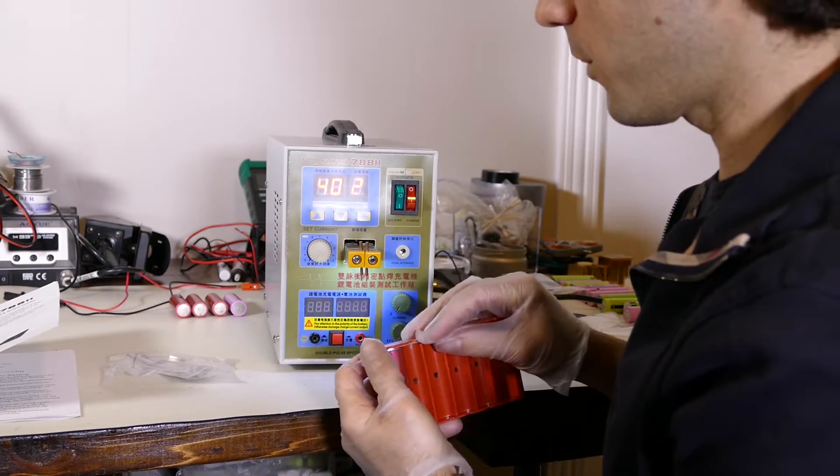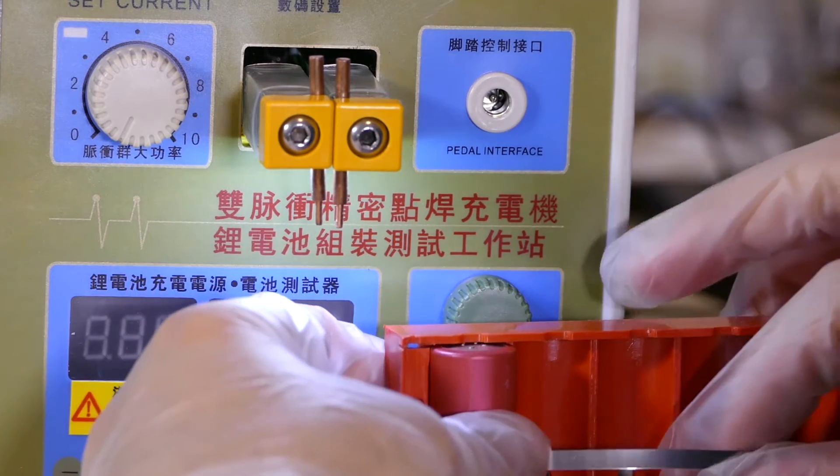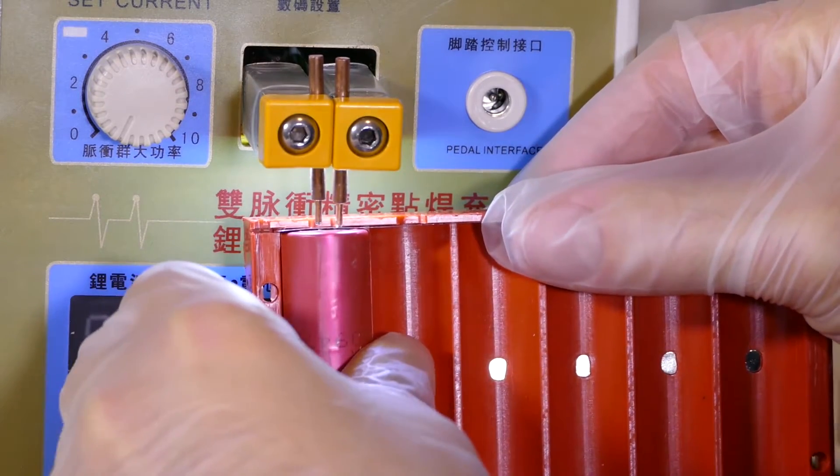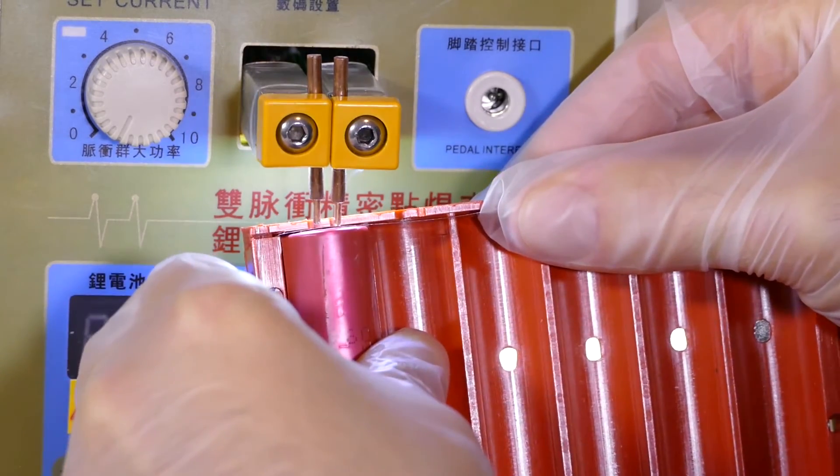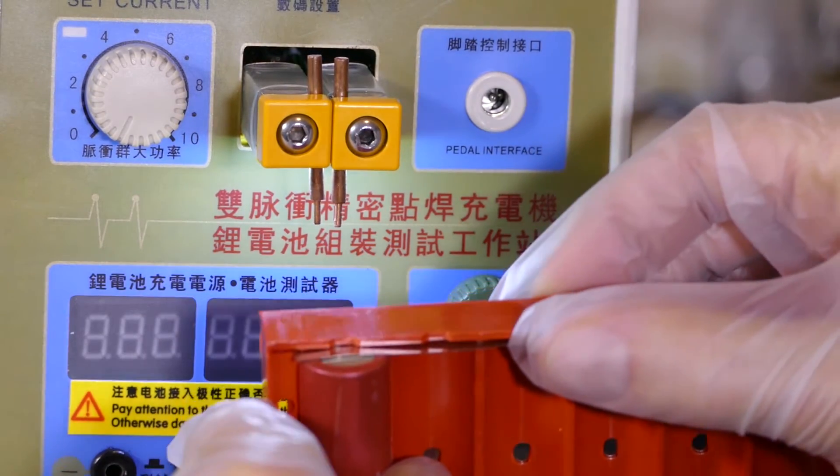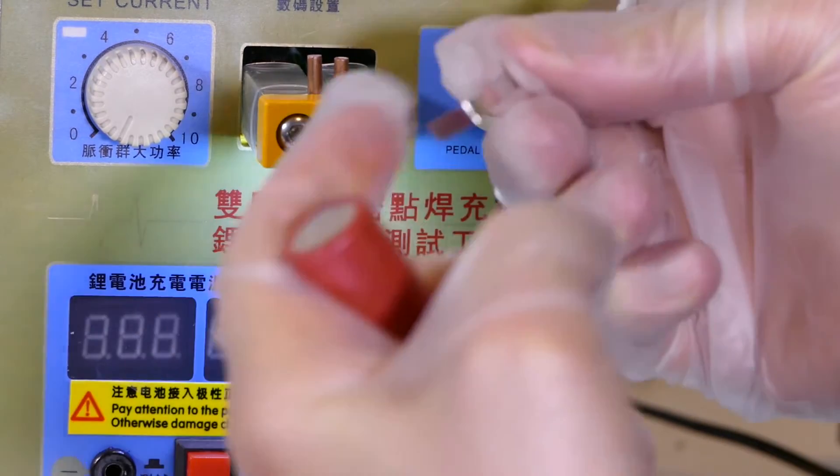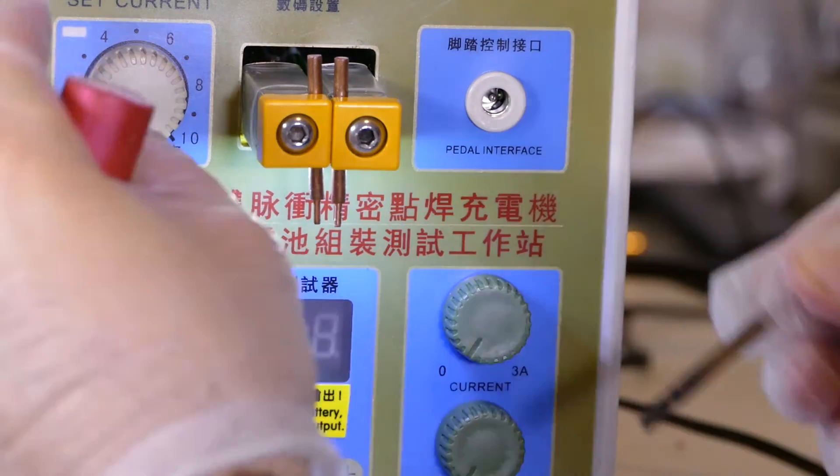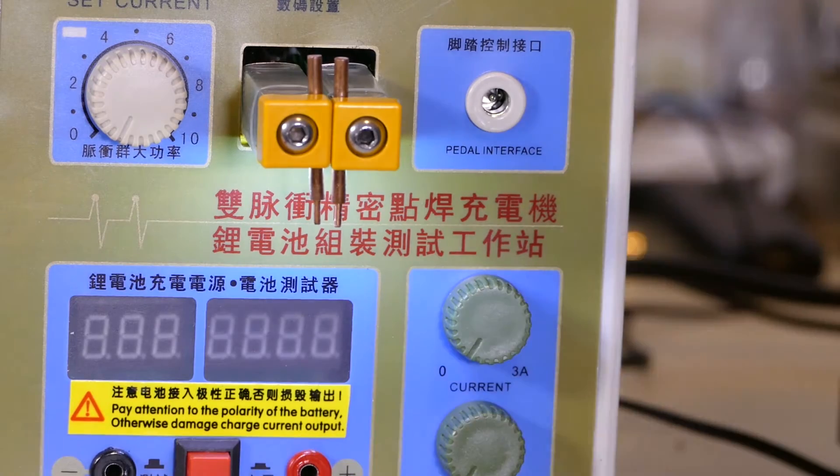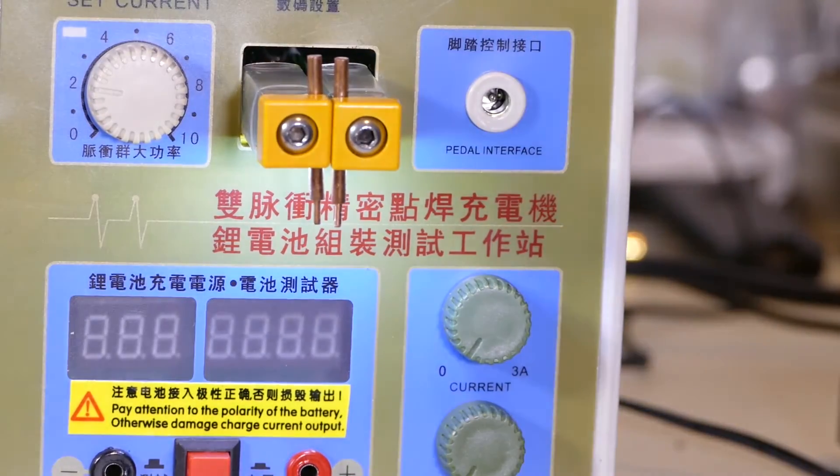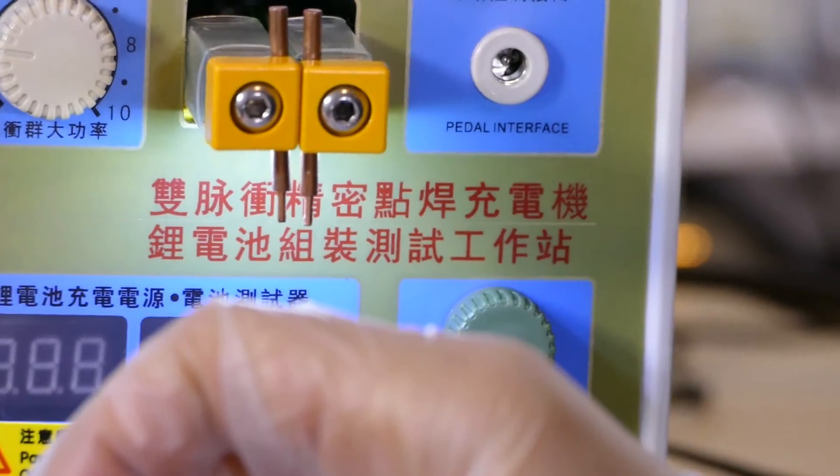Basically we're going to find out what's a good setting for these 18650s. I have some dead ones here, so we'll work with these. I did two quick welds. As you can see it did weld, but it's very easy to pull off. I have the current set at zero. So now I'm going to cut this off and increase the current to two, but I'm going to leave this at 40 and two.